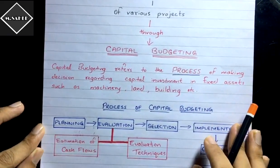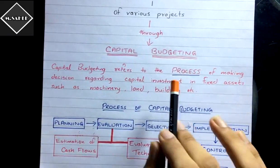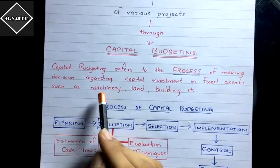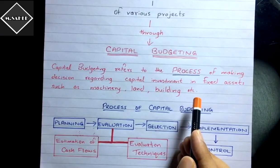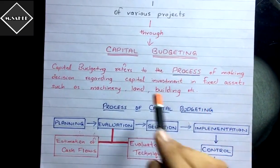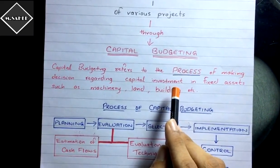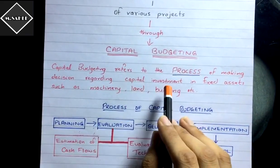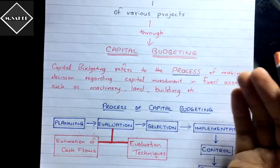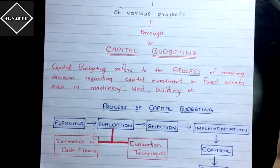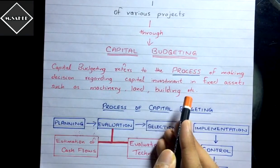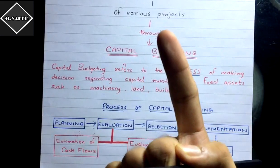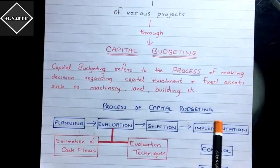Capital budgeting is nothing but a formal process. Capital budgeting refers to the process of making decisions regarding capital investment in fixed assets such as machinery, land, building, etc. Here we are talking about capital investment — capital expenditure — the expenditure through which the benefits will accrue to the business for a long period of time, like seven or ten years, as opposed to revenue expenditure such as rent, whose benefits accrue only for a month.